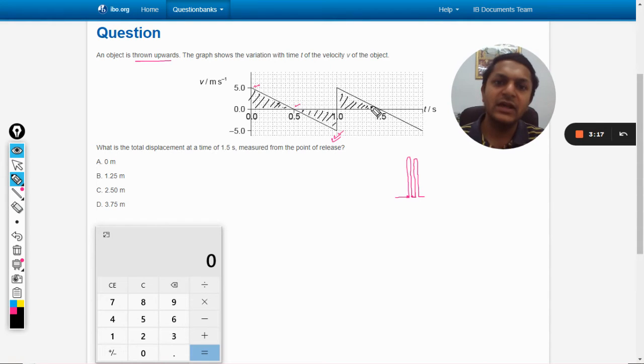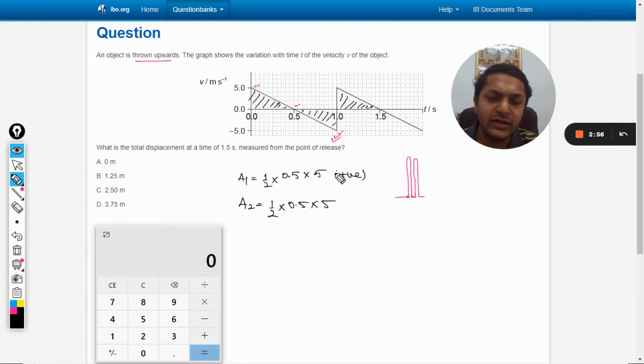The area of this triangle, let's say area 1, will be half into base, that is 0.5, into height which is 5. Area 2 will be again the same, but this area will be positive and this is going to be negative.